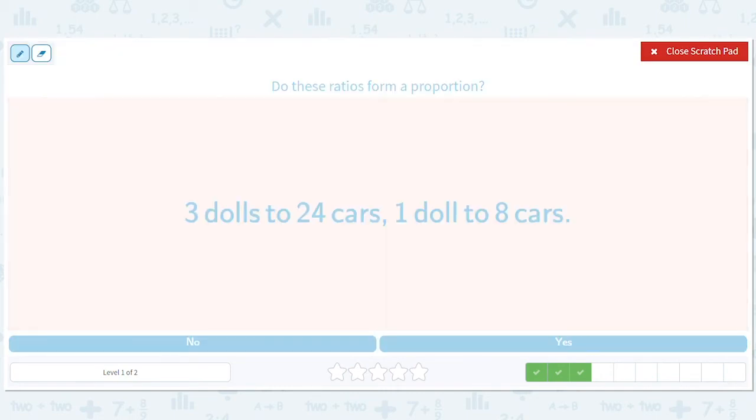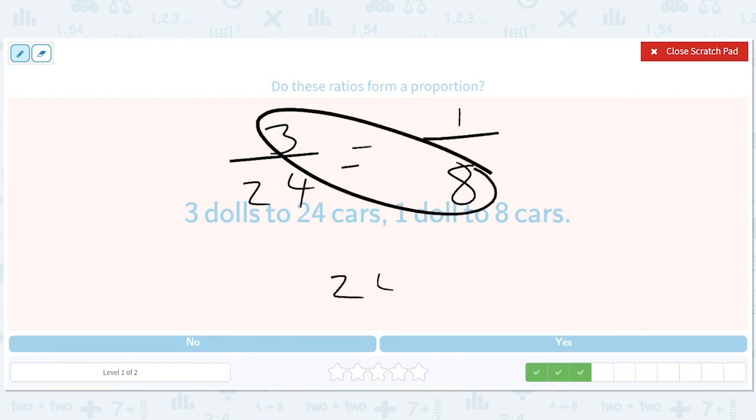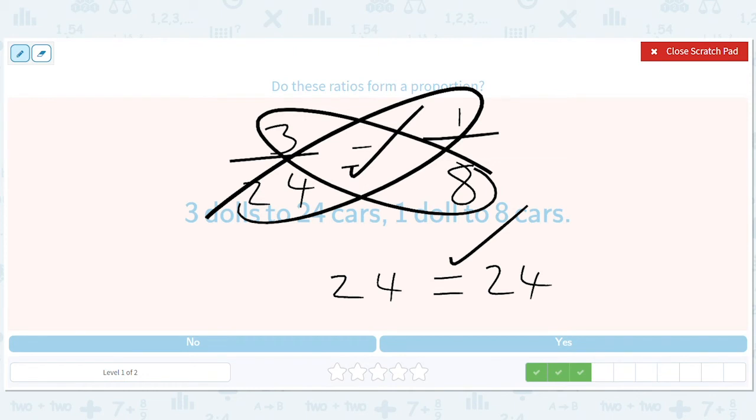Three dolls to 24 cars equals one doll to eight cars. Well, that's 24, and that's 24. And these two things are equal, so that's equal. So these are in proportion.